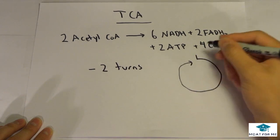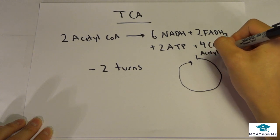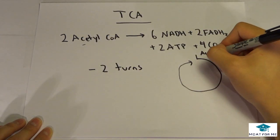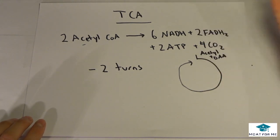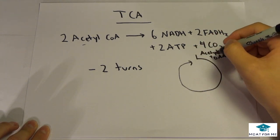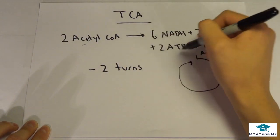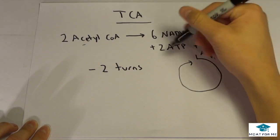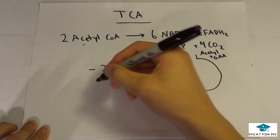We see that the TCA cycle looks something like that. The starting products were acetyl-CoA right there and oxaloacetate. So you need oxaloacetate to react with acetyl-CoA or you're not going to go through the TCA cycle. These are going to go throughout and you have two turns. So if they had just one acetyl-CoA, how much would it produce? Well, it would produce half this amount. 3 NADH, 1 FADH2, 1 ATP, 2 CO2.